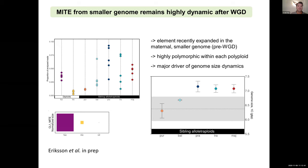We can observe how genome size varies with age: the younger polyploid fits additivity, and as we go further, the polyploids seem to increase slightly and then stabilize around seven gigabases.